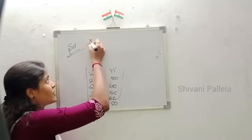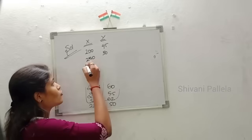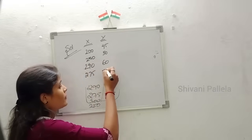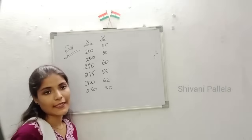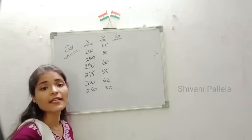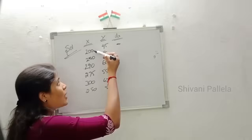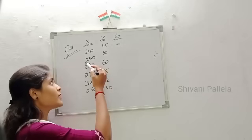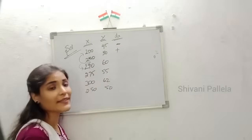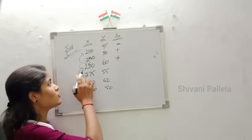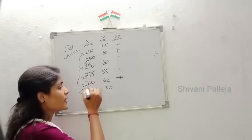Writing the solution: X values are 200, 250, 290, 275, 300, 250 and Y values are 45, 50, 60, 55, 62, 50. Now we calculate DX. The first number gets a hyphen (no comparison). 250 is more than 200, so plus. 290 is more than 250, so plus. 275 is less than 290, so minus. 300 is more than 275, so plus. 250 is less than 300, so minus.